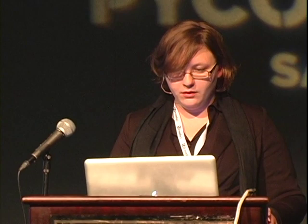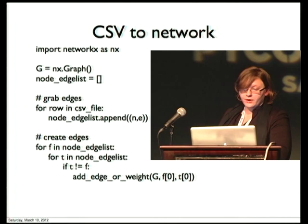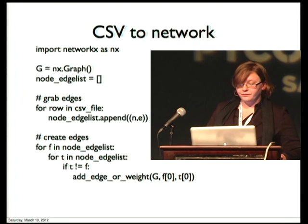We took our CSV and turned it into a network. This is really stripped-down code, but I want to give you an idea of what it involves — it's really simple. You import NetworkX, create a graph, create a node and edge list, loop over your CSV file to add your nodes and possible edges, and then loop over your possible node and edge list twice to compare it against itself, and add your edges to the graph.